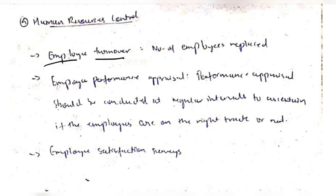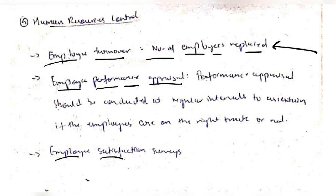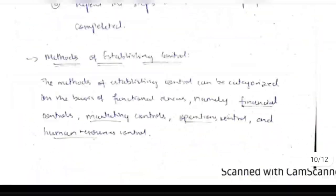The fourth domain is human resource control. This includes employee turnover statistics — tracking how many employees are replaced — employee performance appraisal through frequent conversations about work done and future plans, and employee satisfaction surveys, which help analyze what changes should be made to increase employee satisfaction.